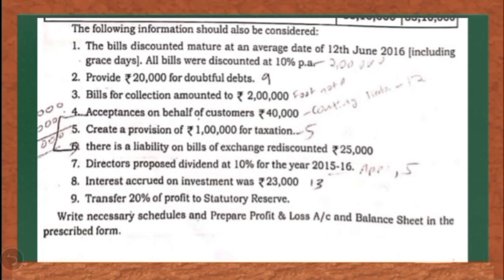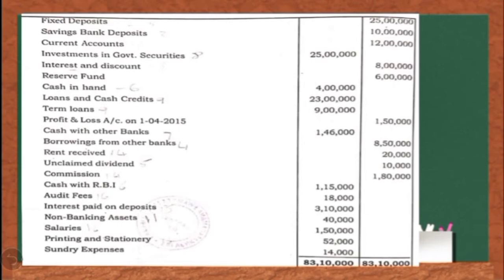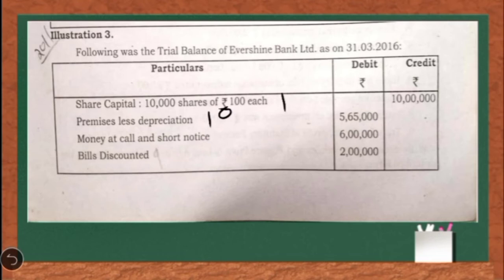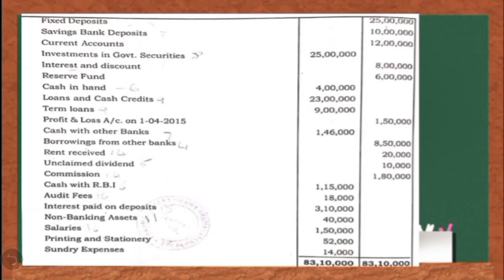Just like the previous questions, we have to first identify which item has to be shown under which note number. In this question, you have to prepare both profit and loss account and balance sheet along with the relevant notes. Now coming to the first item, share capital — it belongs to the balance sheet and should be shown in note number 1. Premises less depreciation is a fixed asset, so it should be shown in note number 10 under fixed assets. Money at call and short notice should be shown in note number 7. Bills discounted is a kind of advance, so it goes in note number 9.